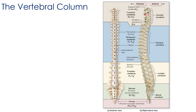The vertebral column has distinct curvatures that provide flexibility. These curvatures are named based on which vertebrae they're composed of, and they appear at different times during fetal and early childhood development. The thoracic and sacral curvatures are primary curvatures, already present in a newborn. The cervical and lumbar curvatures are secondary curvatures that appear after birth — the cervical curvature around three to four months of age when a child can hold up their neck, and the lumbar curvature around the first year when a child learns to stand and walk.